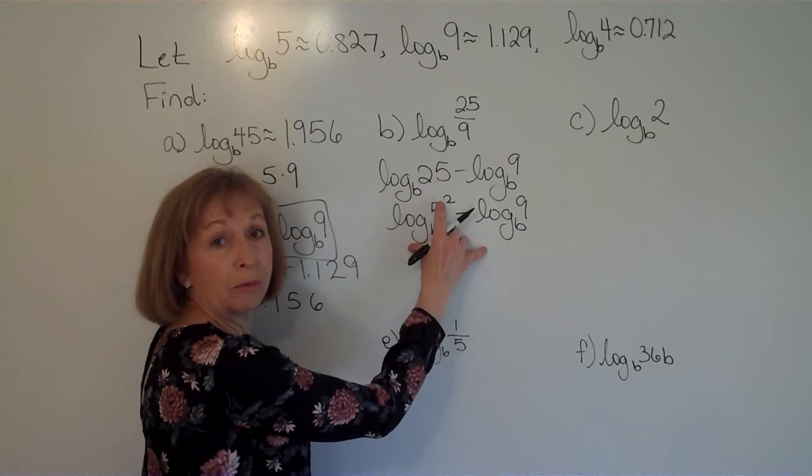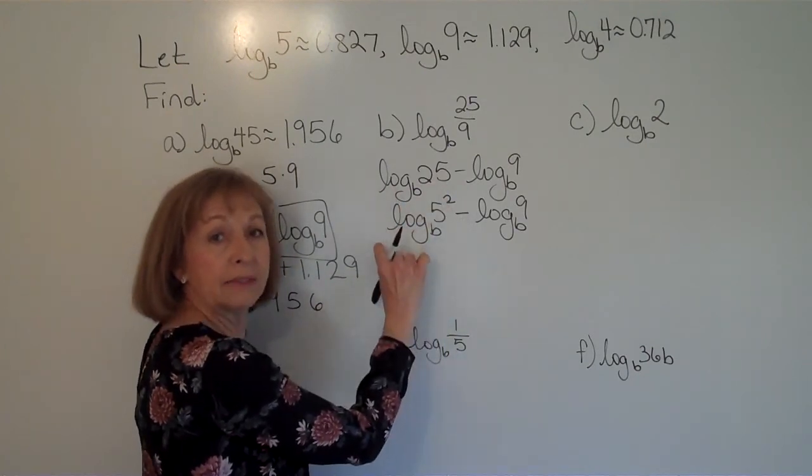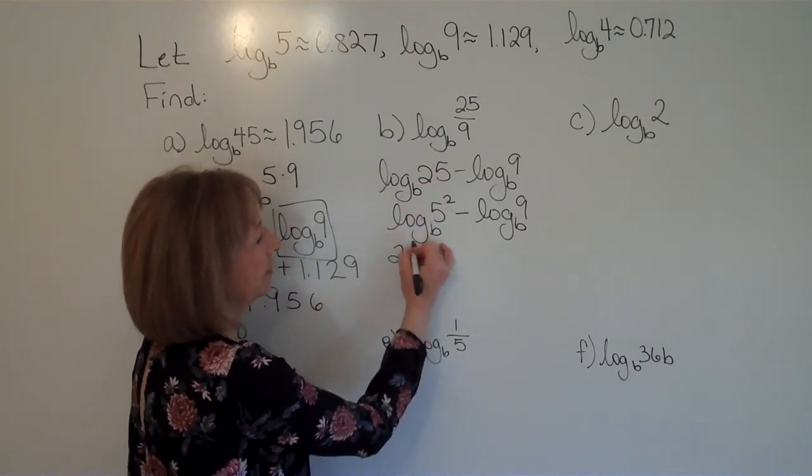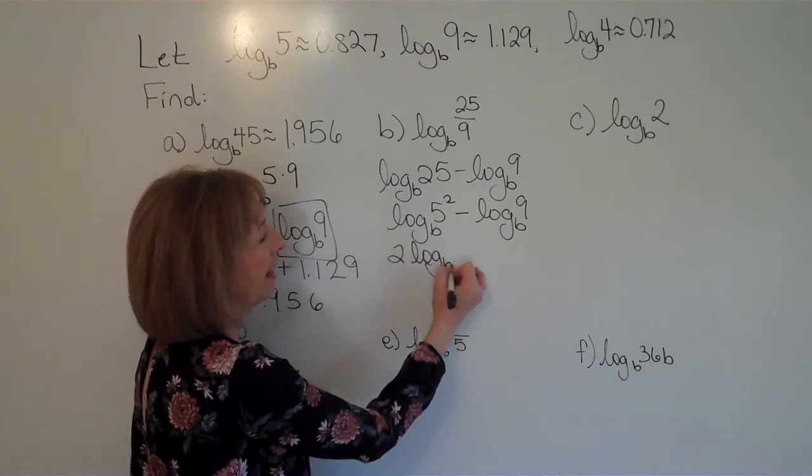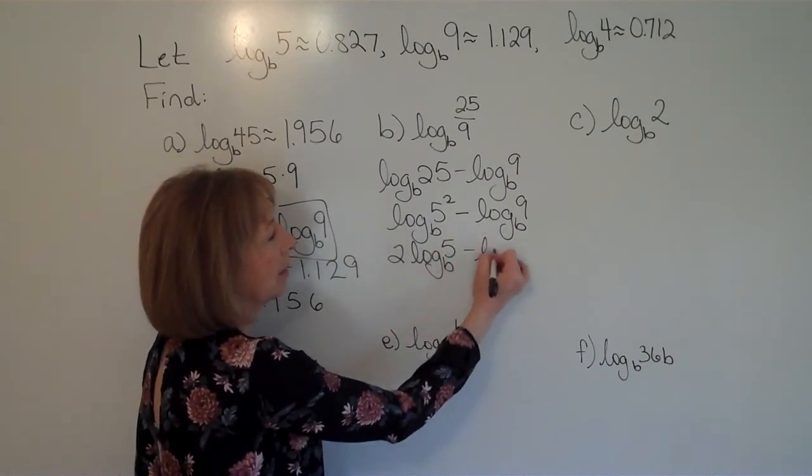So with our properties of logarithms, when I have the logarithm of a quantity to a power, the power comes down as a factor in front of the logarithms. So it's 2 times the log base b of 5 minus the log base b of 9.